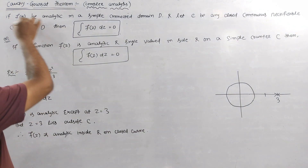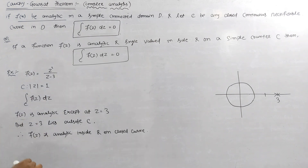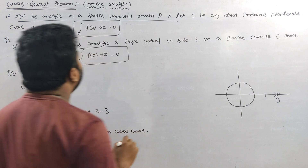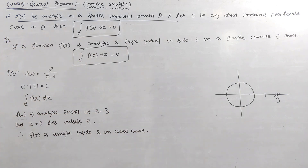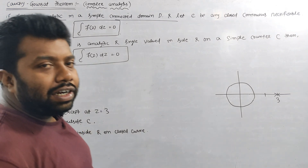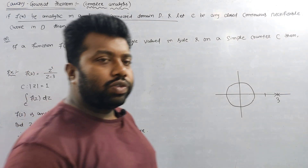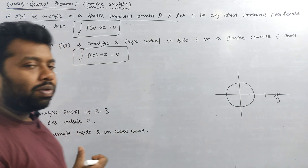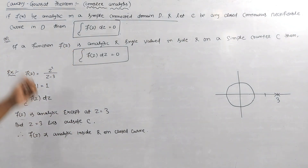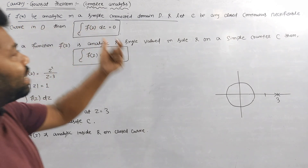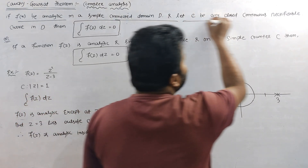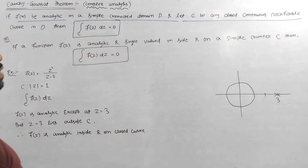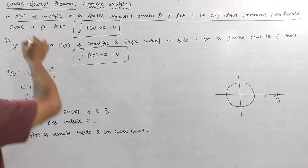If f(z) is an analytic function, f(z) is analytic in a simply connected domain D. If f(z) is analytic in a simply connected domain D, we will start an equation for the function satisfying the Cauchy-Riemann conditions. That's why we have analytic. If f(z) is analytic in a connected domain D, let's see if any closed continuous rectifiable curve in D.